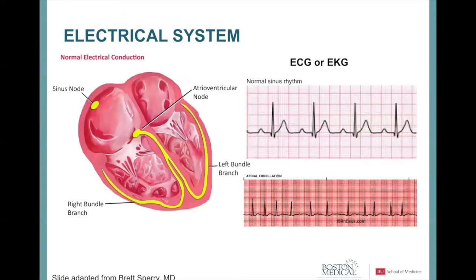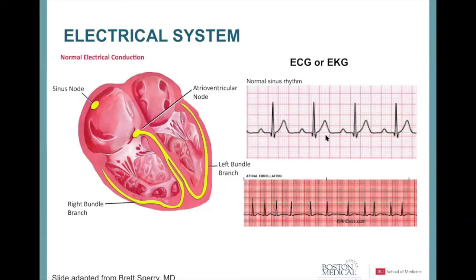The sinus node at the top of the right atrium is where the heart rhythm normally originates. The impulse travels through the atria, passes through the AV node, and then through specialized bundle branches to the heart. An EKG measures these electrical impulses — you're all familiar with this from television or high school physiology. The ECG traces both atrial and ventricular electrical impulses.